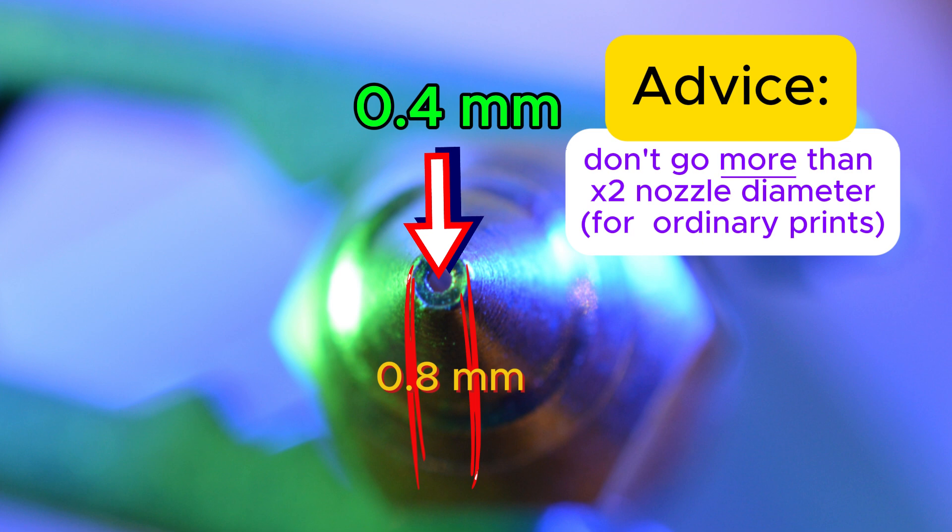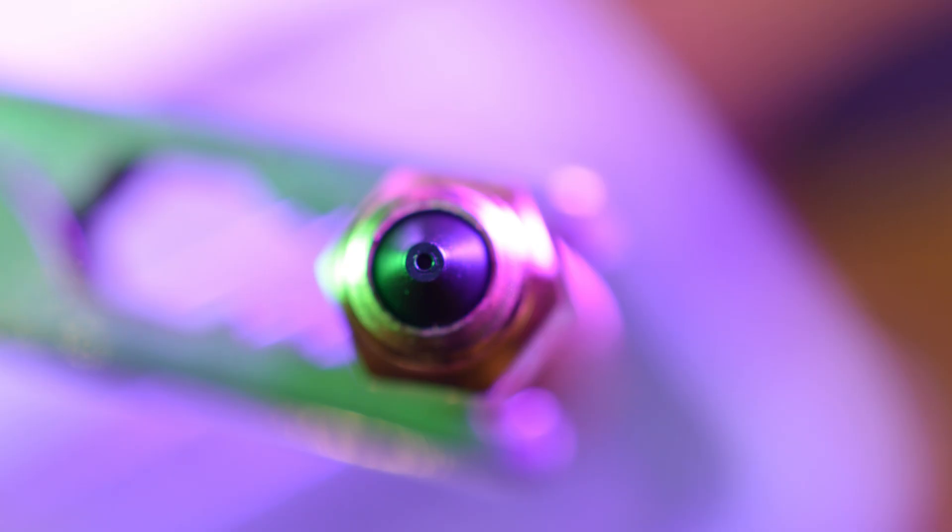But vase mode allows you to go wider. Next is macro picture of Creality K1C Unicorn nozzle, which has a slightly bigger platform, around 1 mm.